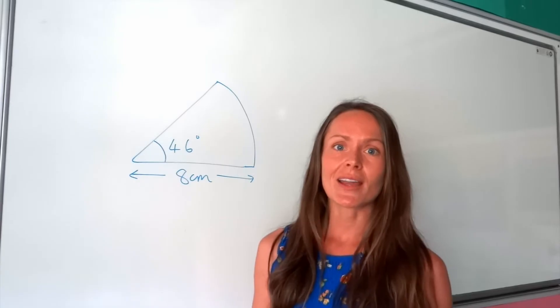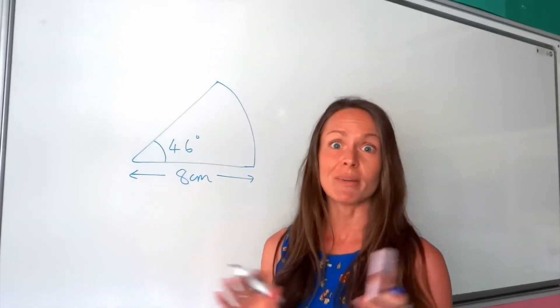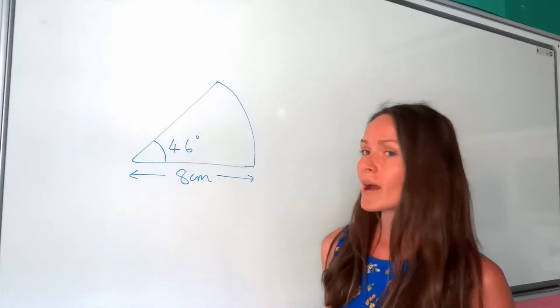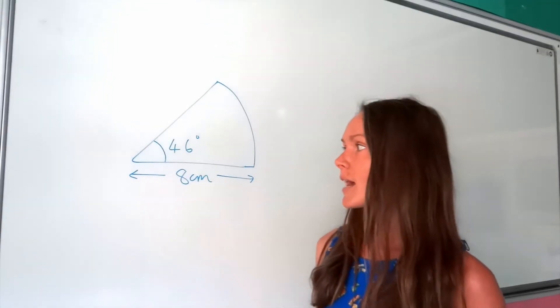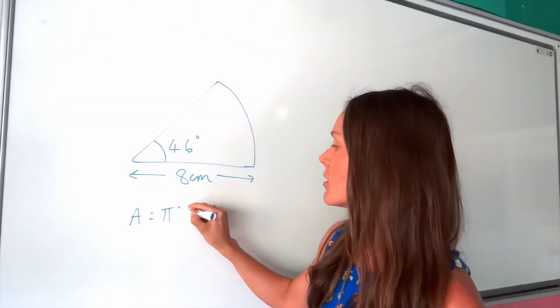So if you already know how to work out the area of a circle, then working out the area of a sector is really a piece of cake. Just remind yourselves of the equation, the formula, to work out the area of a circle: A equals pi r squared.